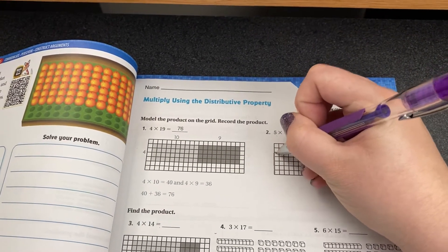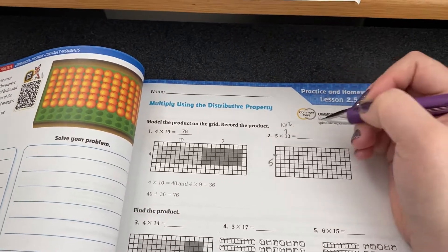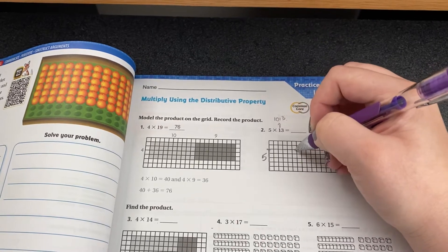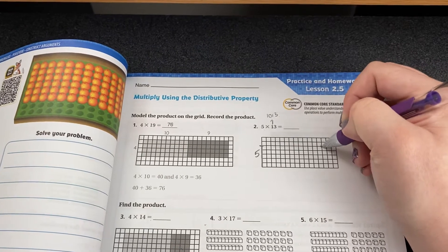So to draw a picture of that, I know I have five down the side here. So one, two, three, four, five groups of thirteen. I'm going to count across: one, two, three, four, five, six, seven, eight, nine, ten, eleven, twelve, thirteen.